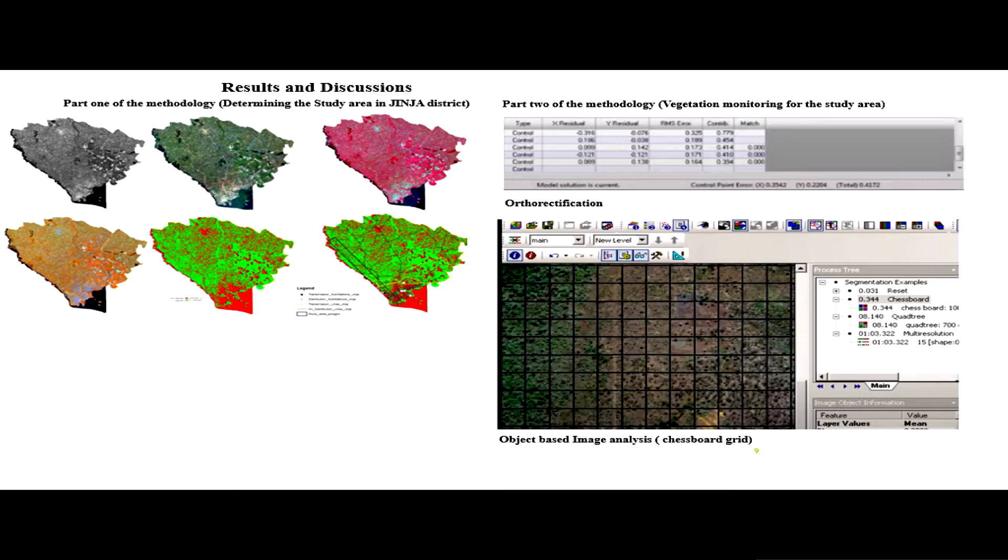The first step in part two is orthorectification. For the first point, there is a root mean square error of 32.5 centimeters. That's good enough because the IKONOS data has one meter spatial resolution.